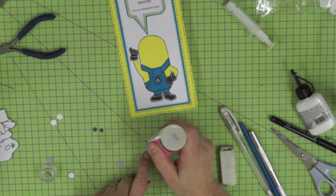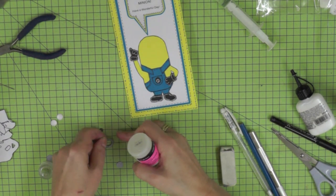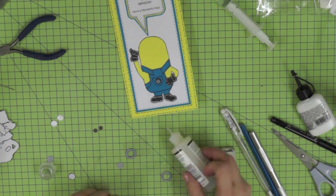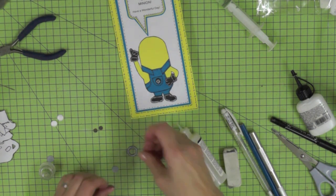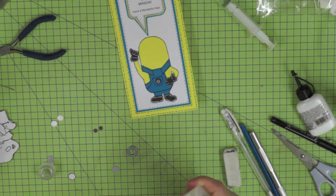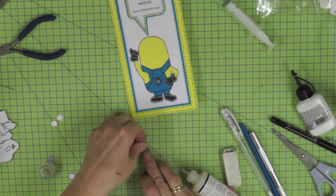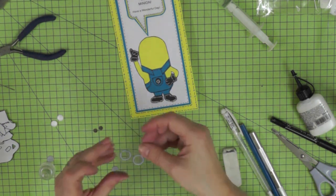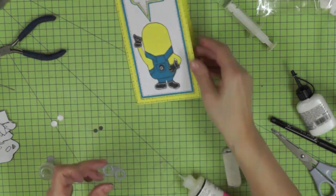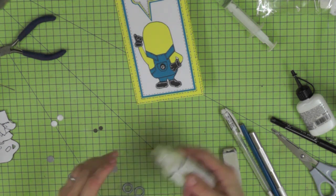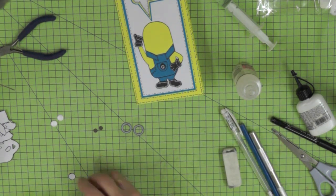So I used Glossy Accents to attach these small glasses to a piece of acetate and that is going to make his little glasses. So just allow that to dry before you try to cut it out.